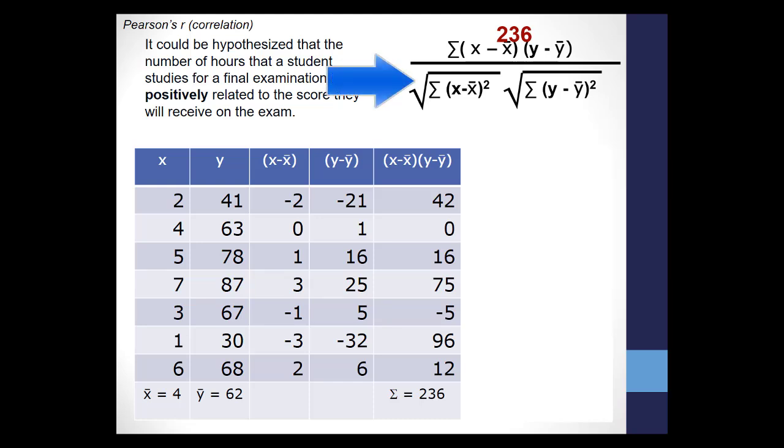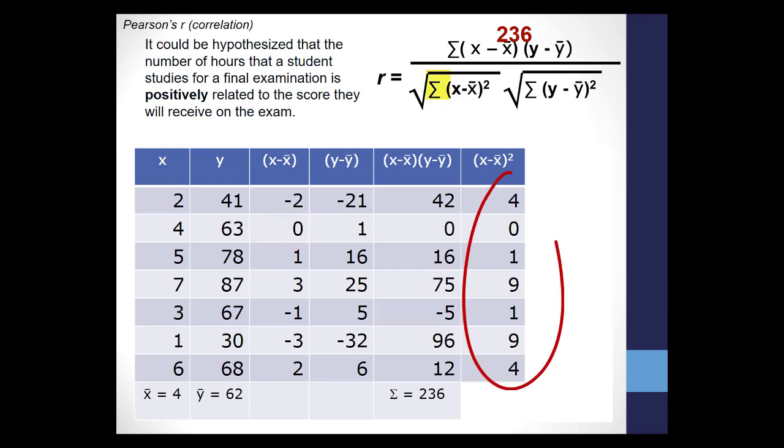Now onto the denominator, which tells you to square the result of each score minus the group mean. Go back to the x column. Negative 2 squared is 4, 0 squared is 0, and the rest of the x scores. Sigma tells you to add all of these numbers together, and we get 28.